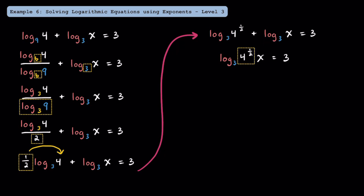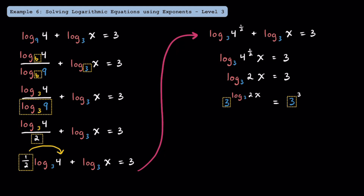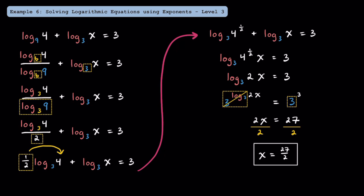Since 4 to the 1 half power just means the square root of 4, we can simplify that down to 2. Now to get rid of this log base 3, we use base 3 and exponentiate on both sides. This way, 3 to the log base 3 cancels out, and we're left with 2x on the left side, and 3 to the third power on the right side is 3 times 3 times 3, which equals 27. Finally, dividing both sides by 2, we find that x is equal to 27 halves.